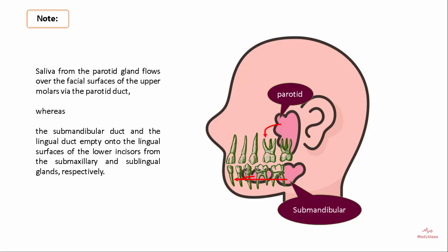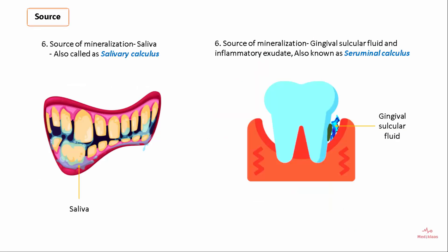The source of mineralization for supragingival calculus is saliva, and hence it is also called salivary calculus. The source of mineralization for subgingival calculus is the gingival crevicular fluid and the inflammatory exudate present in the subgingival area, so it is also known as serumal calculus.